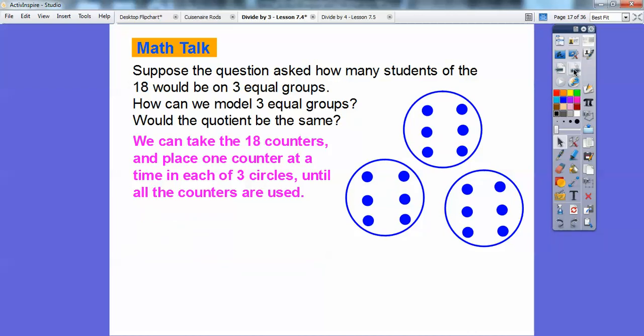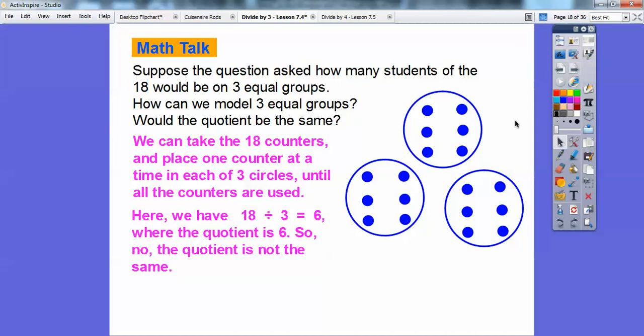So then here we have 18 divided by 3 this time equals 6. So the quotient is the 6 this time. Remember this is the dividend, this is the divisor, this is the quotient right here.